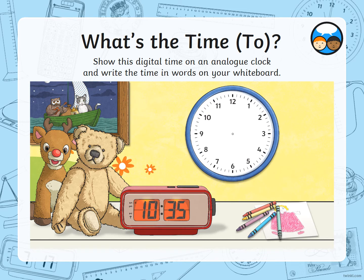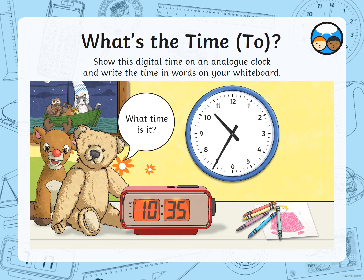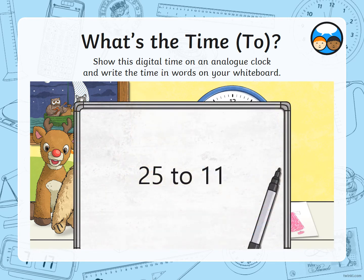This one: the hour is 10 and 35 minutes has gone past. So the hour hand — the small hand — is past the 10, and again we count round the outside until we get to 35. That time is 25 to 11.